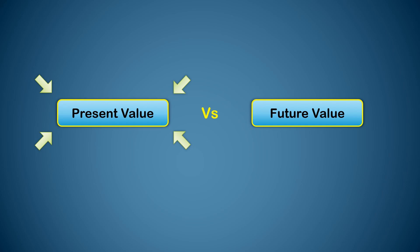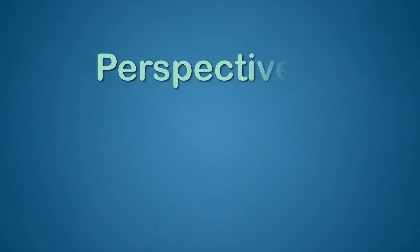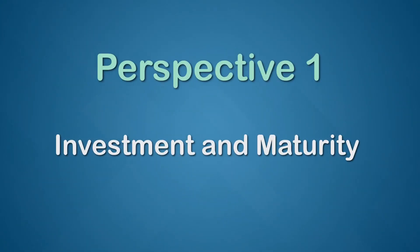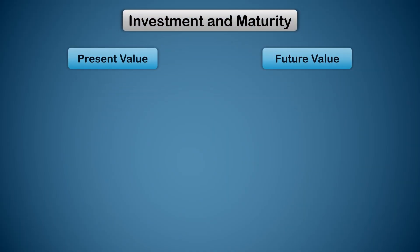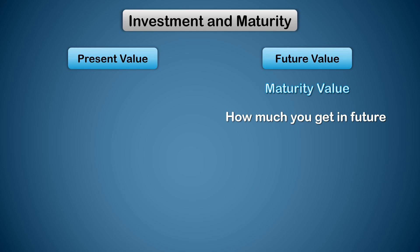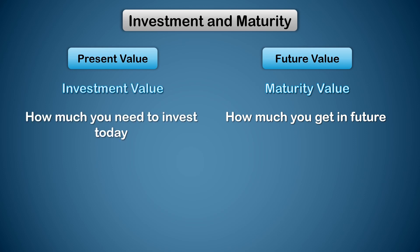We will compare the idea of present value against future value from multiple angles so that you can choose the perspective you are most comfortable with. From this perspective, you can refer to future value as the maturity value — the money that you will get in the future if you invest it at a particular rate for a particular period of time. Present value is just the back-calculation of today's investment value based on what you are going to get in the future.